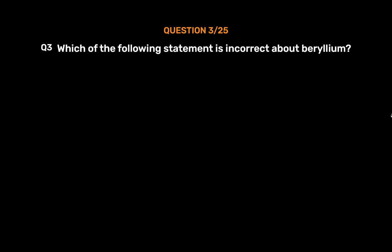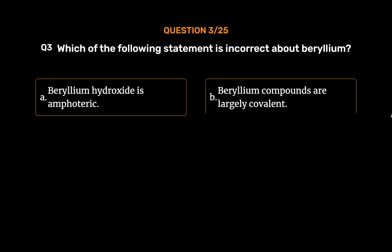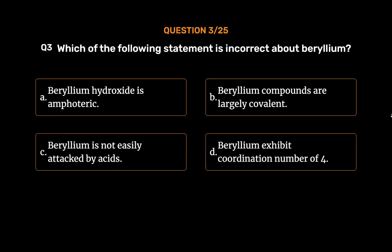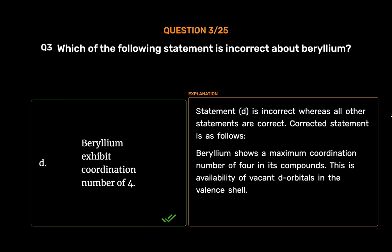Question number 3. Which of the following statements is incorrect about beryllium? Option A, beryllium hydroxide is amphoteric; Option B, beryllium compounds are largely covalent; Option C, beryllium is not easily attacked by acids; Option D, beryllium exhibits coordination number of 4. The correct answer is Option D. Statement D is incorrect whereas all other statements are correct. The corrected statement is: beryllium shows a maximum coordination number of 4 in its compounds, due to availability of vacant d-orbitals in the valence shell.